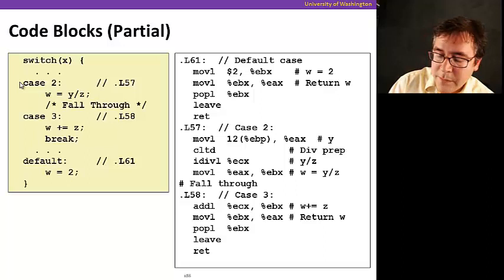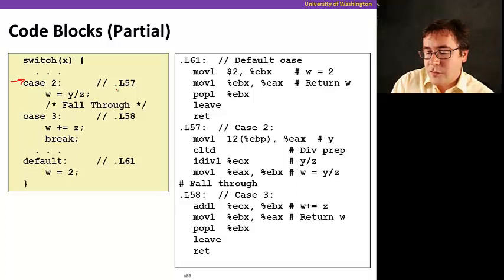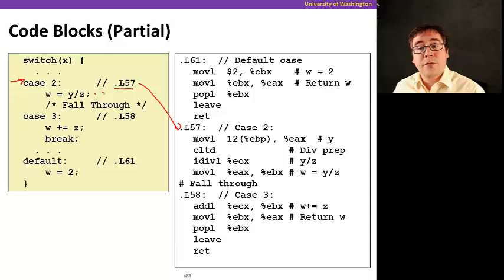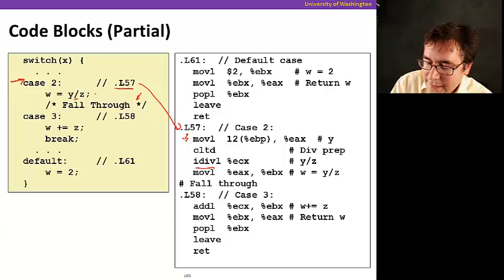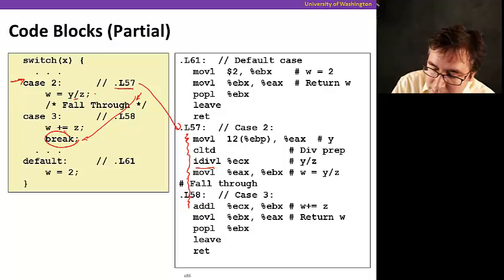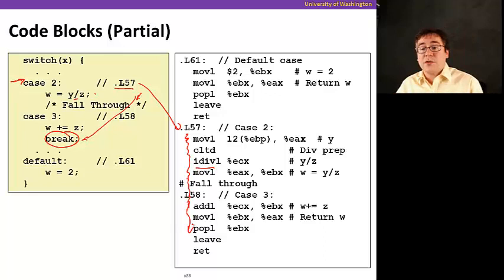So now let's see how the code blocks are implemented. So here, suppose that we have, we're interested in case 2 here. And case 2 happens to be mapped to label .L57. That means that this is where the assembly code that implements the block for case 2 is located. So we have a division here. So that's why we must have a division instruction here. And note that this is a fall through case. So it's going to be, in case x is 2, it's going to be executing. And it's going to continue executing through the next case block here until the break statement.